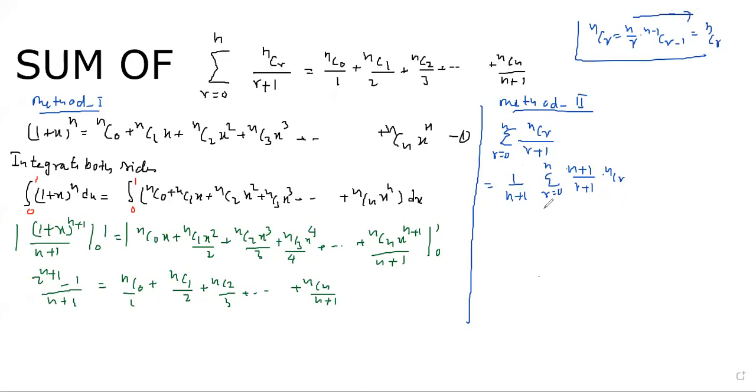So we can see it is equal to n plus 1 summation r equals 0 to n, this will be n plus 1, c r plus 1. Now we can see here, n plus 1, n plus 1, c1, n plus 1, c2.